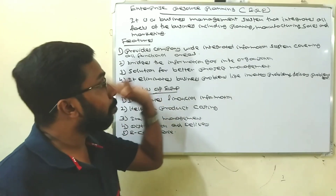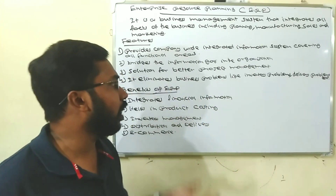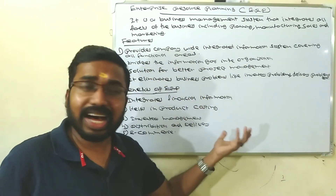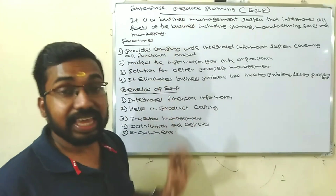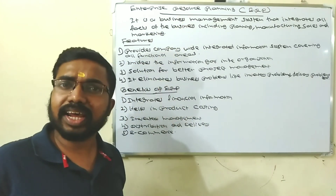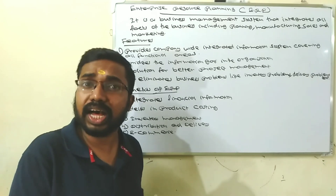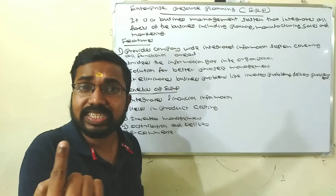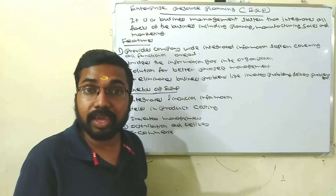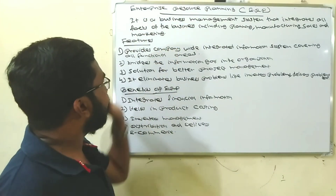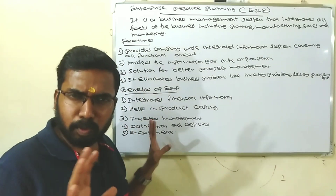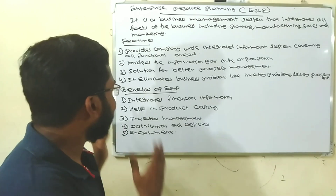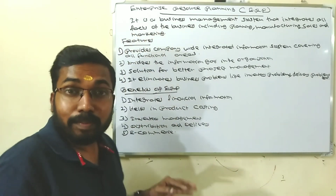Feature number four: it eliminates business problems such as inventory problems, delivery problems, and distribution issues. You can integrate all of these with the help of ERP. Those are the four important features.